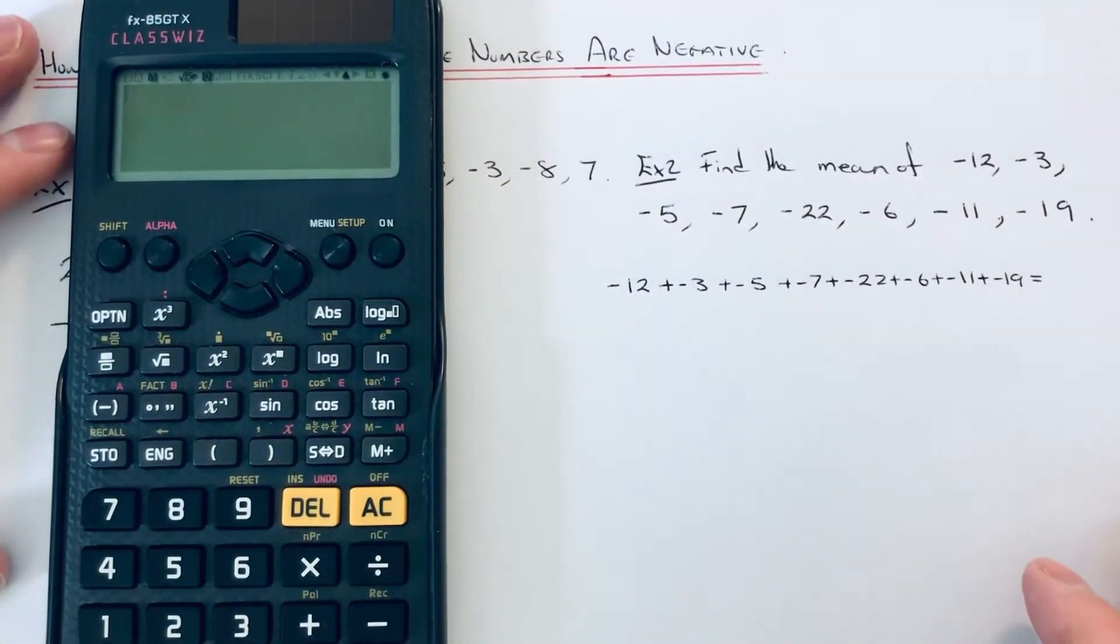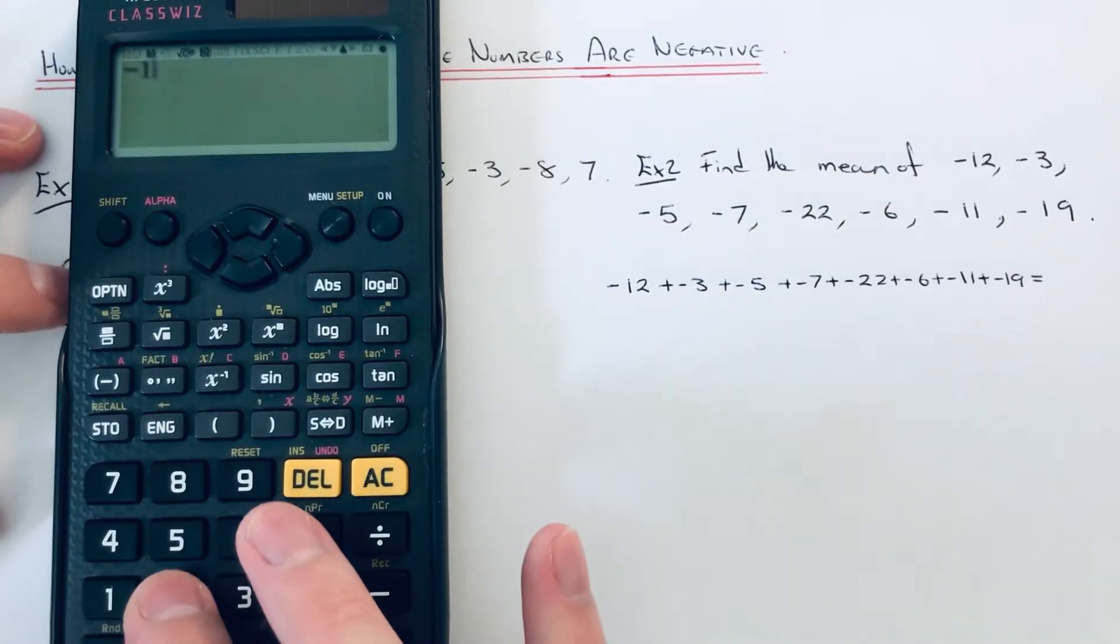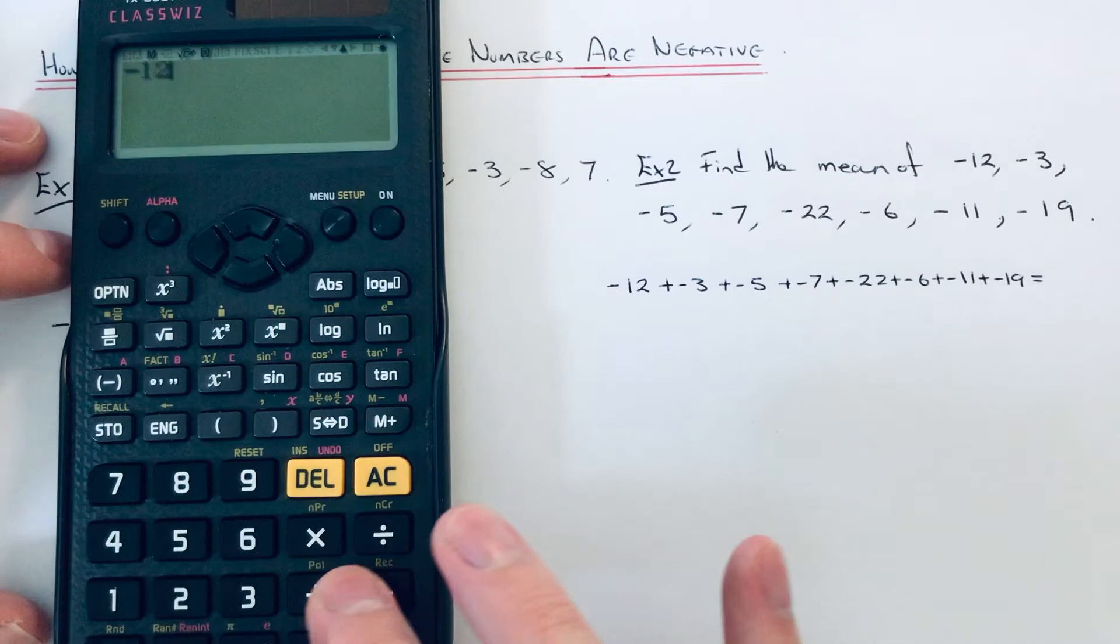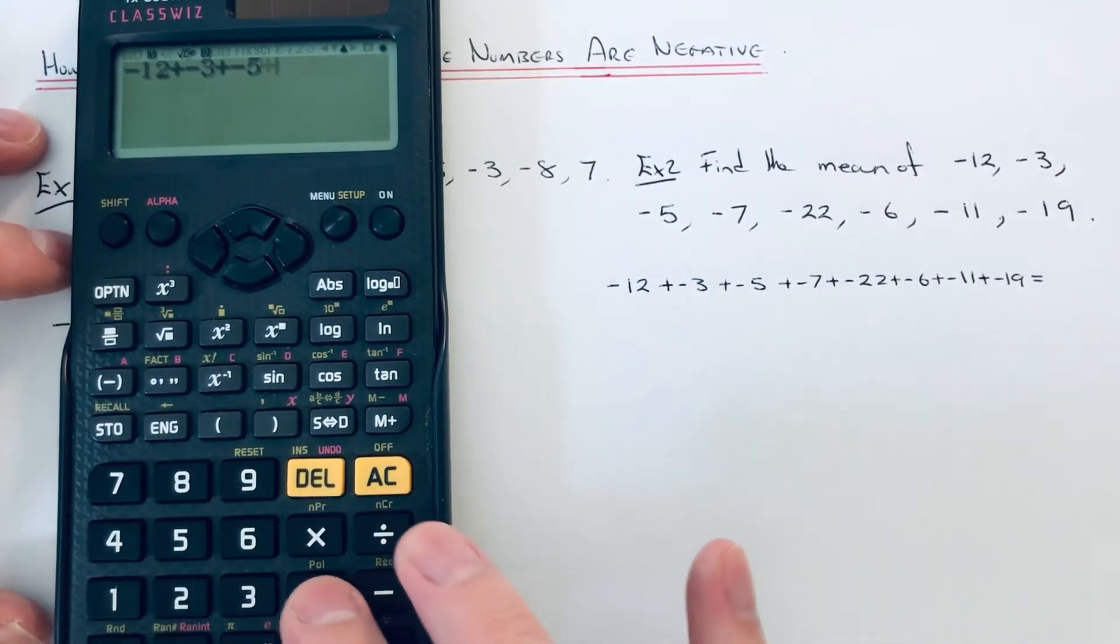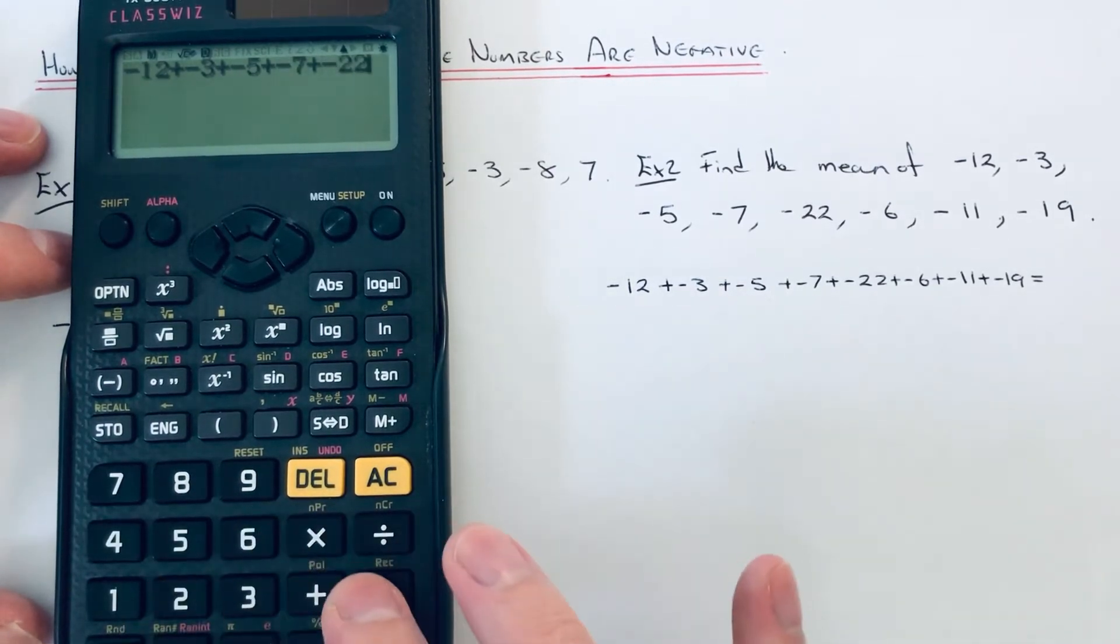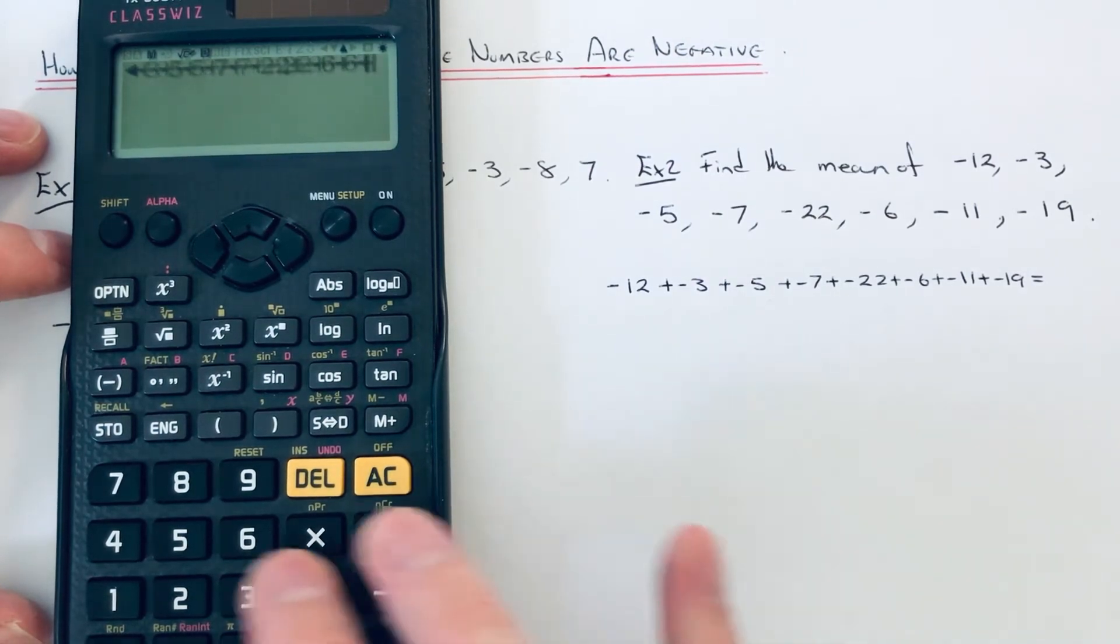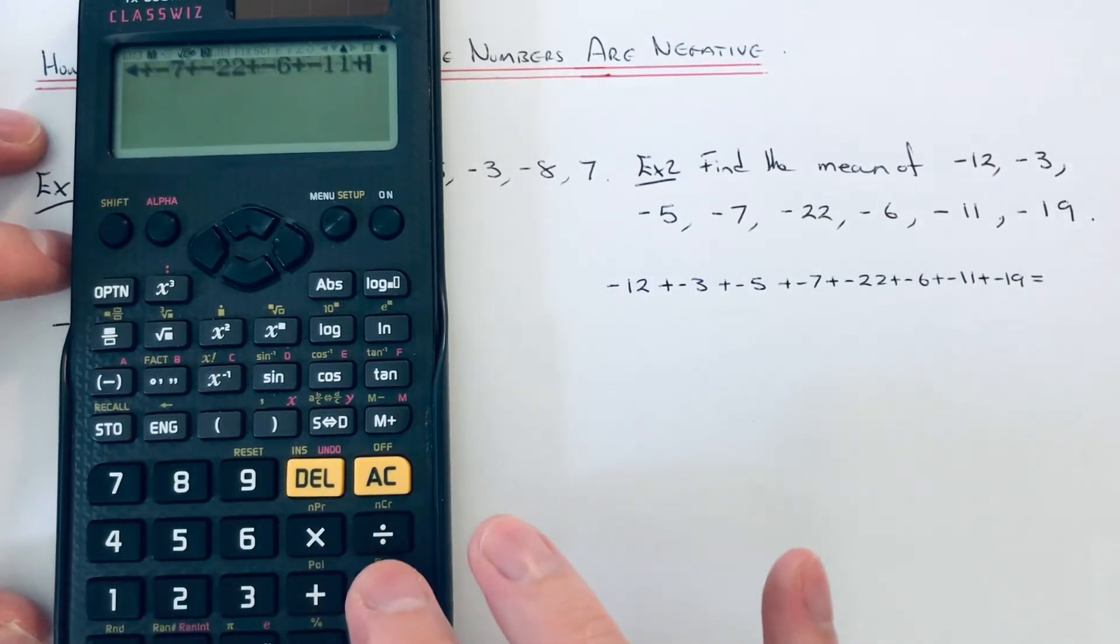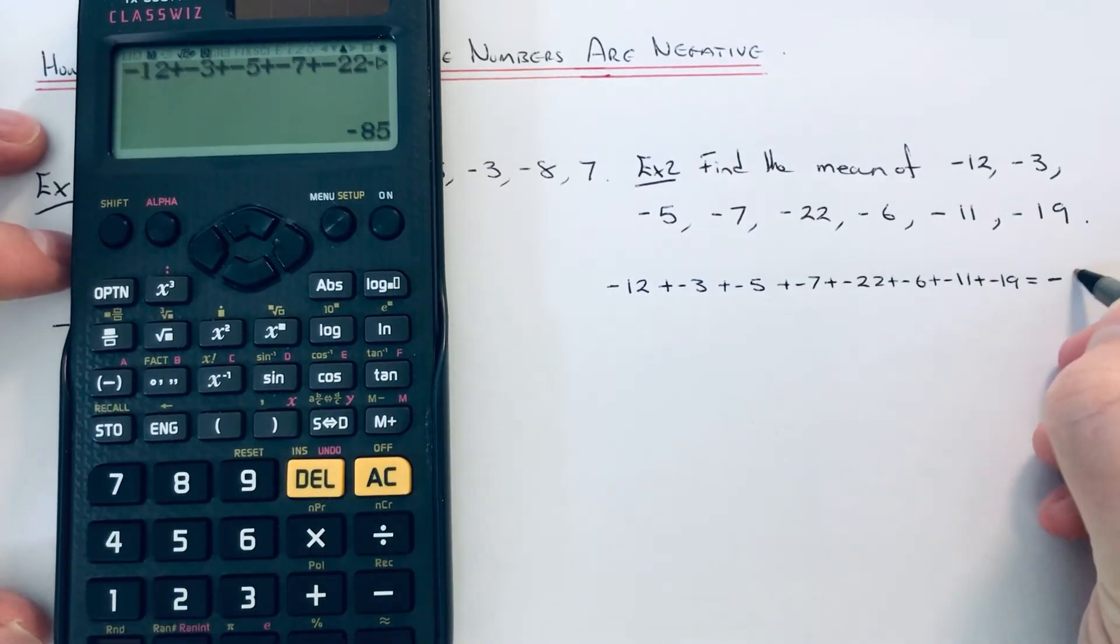Again, we just type it in on the calculator like that. So we've got minus 12, add minus 3, add minus 5, add minus 7, add minus 22, add minus 6, add minus 11, add minus 19. So we get a total of negative 85.